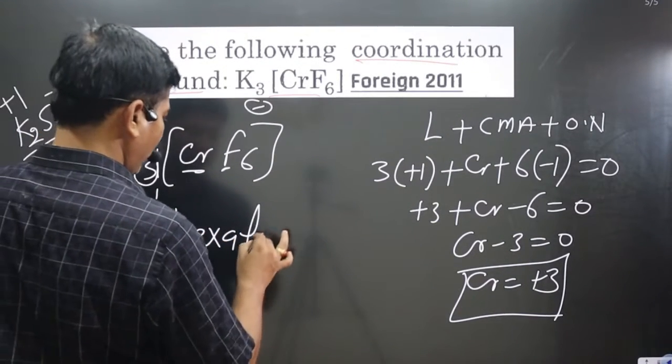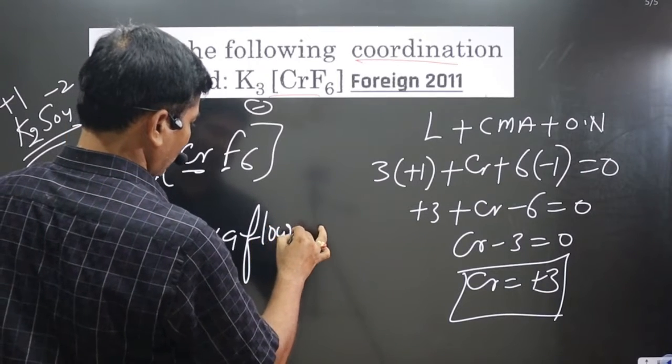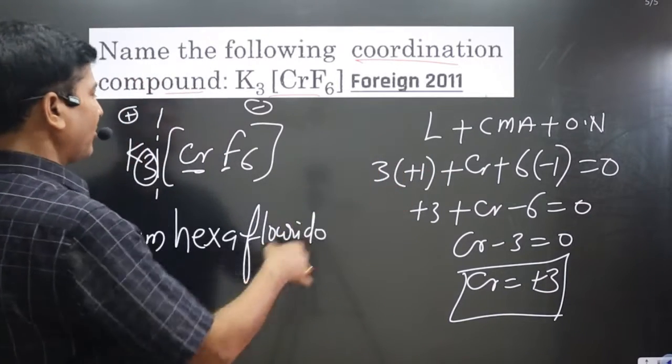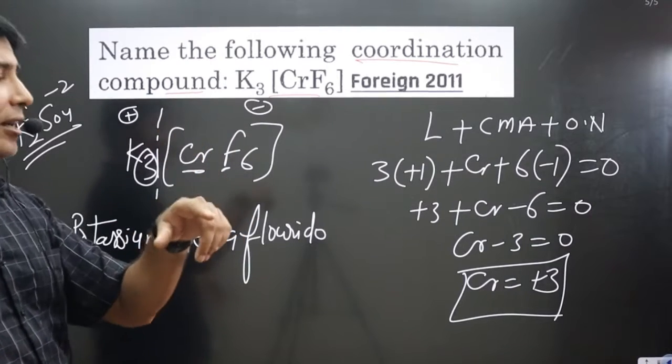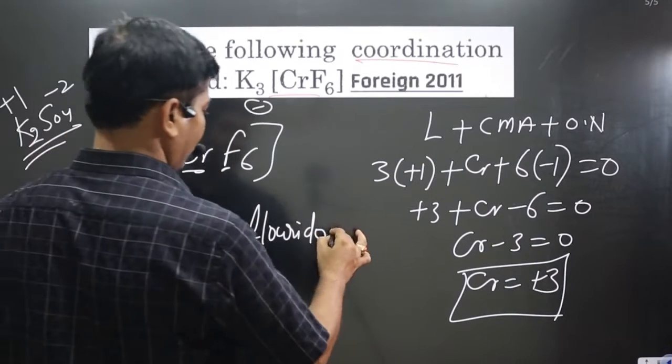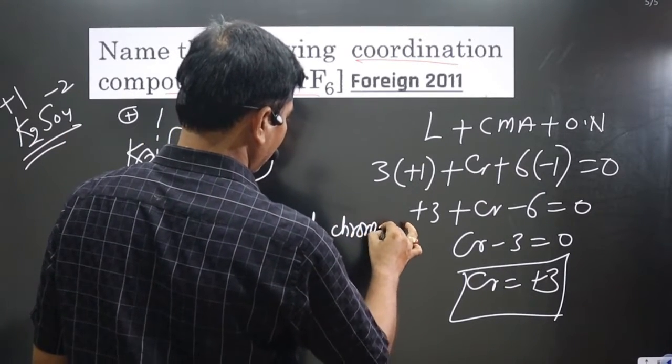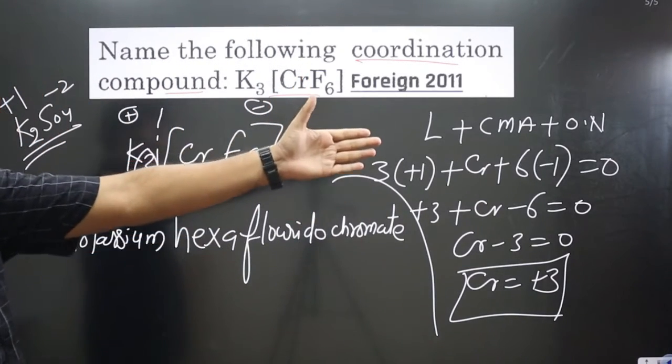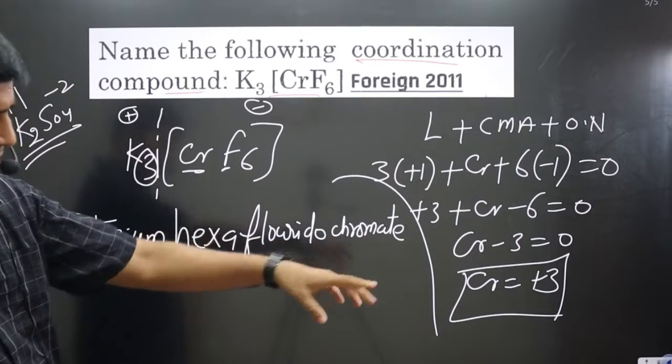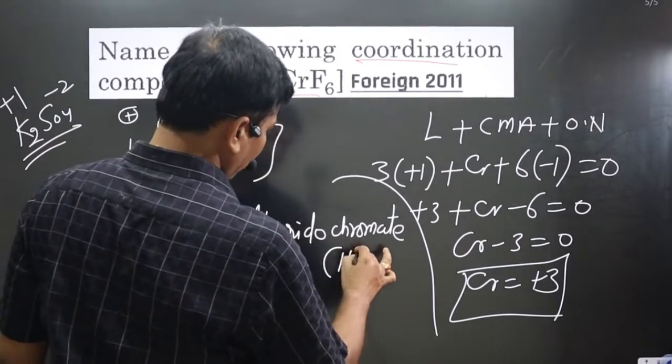Then the central metal atom, chromium. Since it is present in the anionic complex, we use chromate. Then after that, the oxidation number in roman numerals. The oxidation number is three, so we write three in roman numerals.